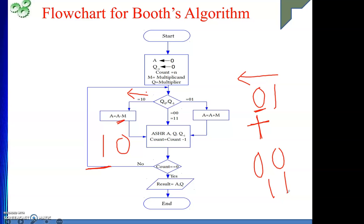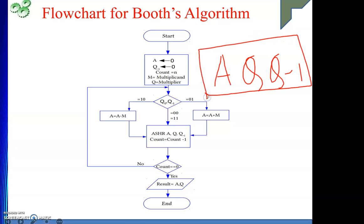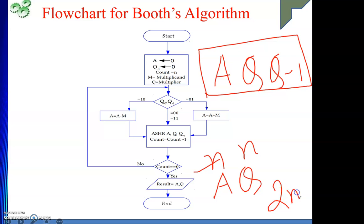If the two consecutive bits are the same, we are not going to perform either addition or subtraction. After this step, we perform an arithmetic shift right. The operand is the combined content of register A, register Q, and the Q minus one bit — all taken as a single input. After that we decrement the count. If count reaches zero we stop; otherwise we repeat the procedure.